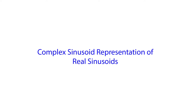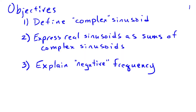In this video, we're going to look at representing real sinusoids in terms of a signal that we're going to call a complex sinusoid. Our objectives are: first, to define what we mean by a complex sinusoid; then we'll show that real sinusoids can be expressed as sums of complex sinusoids; and we'll also explain what the term negative frequency means.